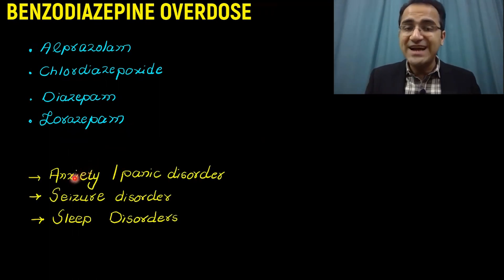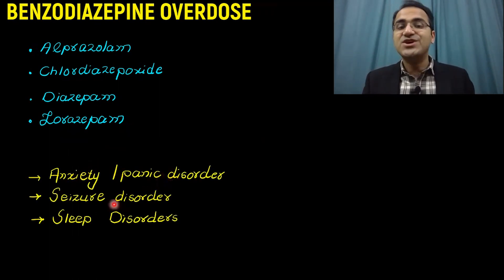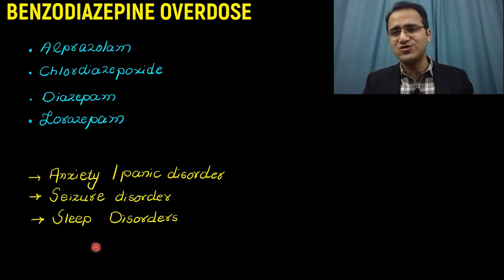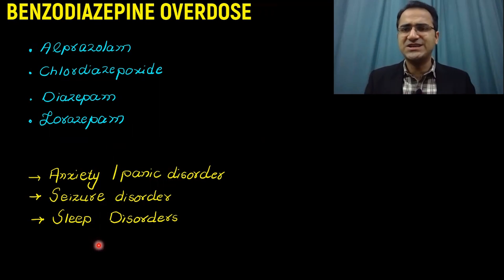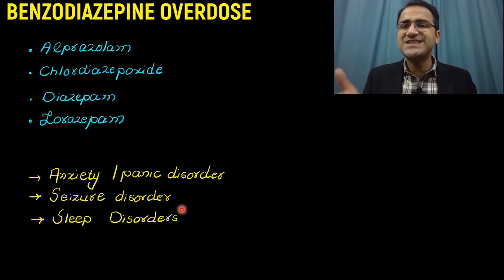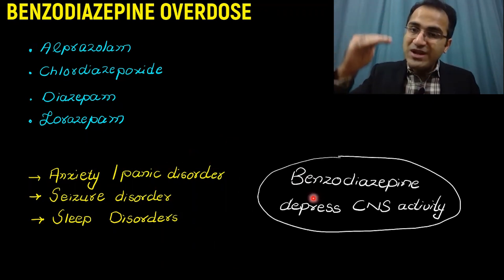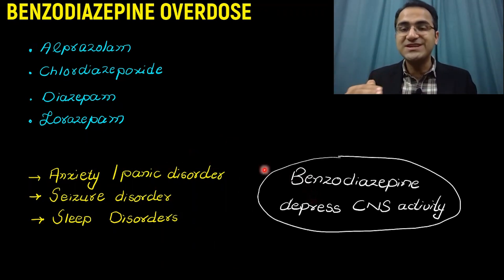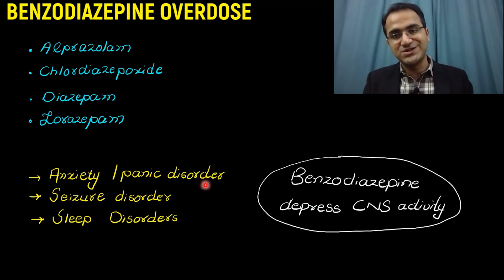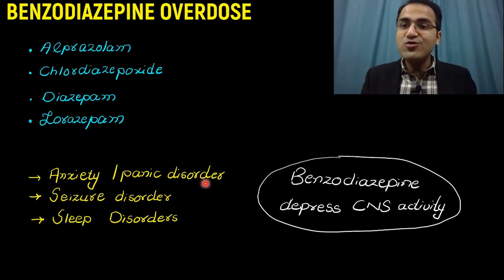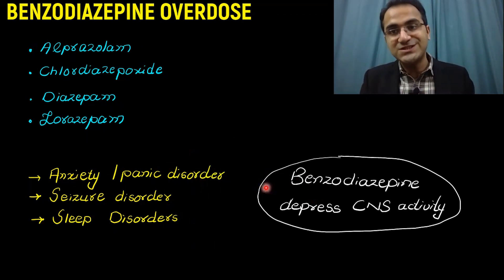Benzodiazepines are used in anxiety or panic disorder, seizure disorders, and sleep disorders, among many other indications. All these conditions involve excessive excitation of the brain. What benzodiazepines do is depress the central nervous system, resulting in the treatment of all these conditions. So the overdose effects of benzodiazepines would manifest as depression of the central nervous system.